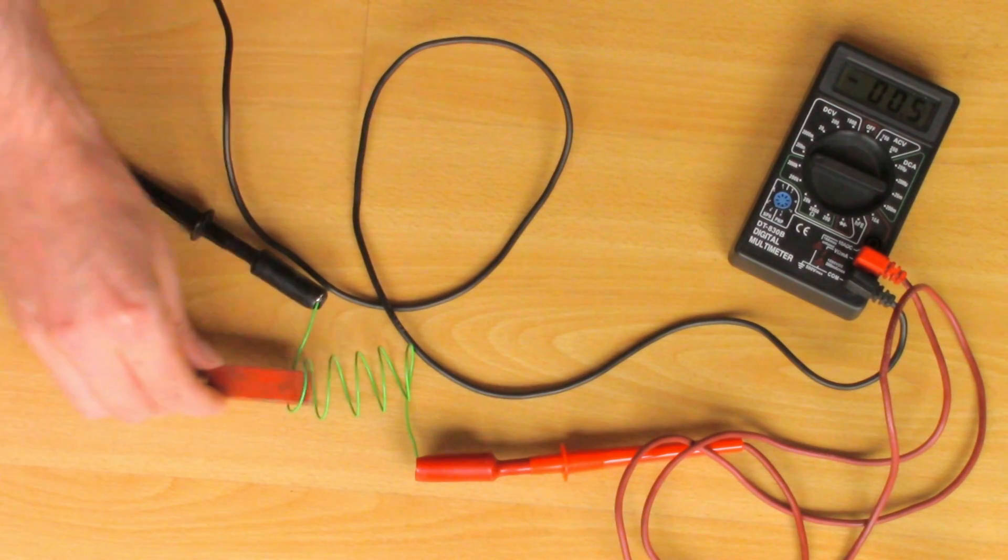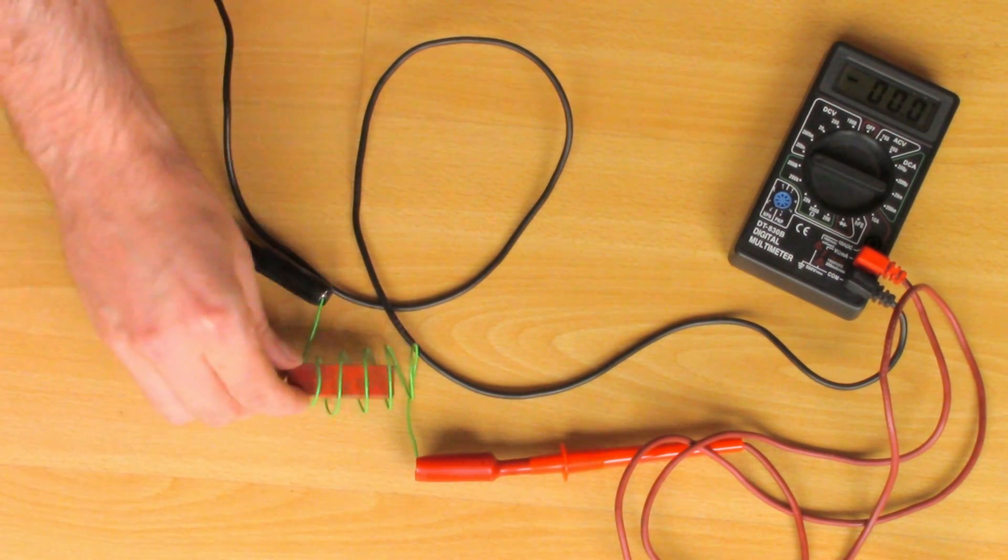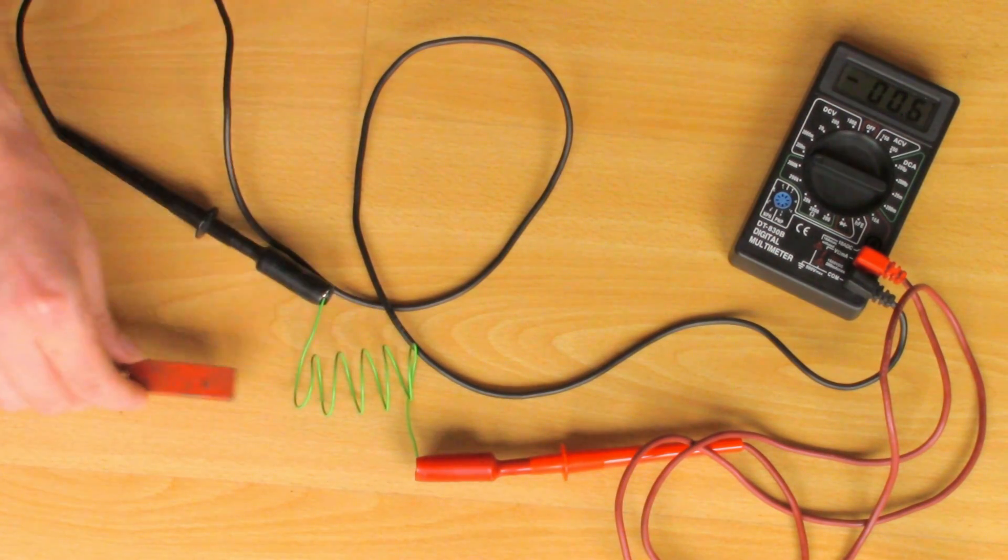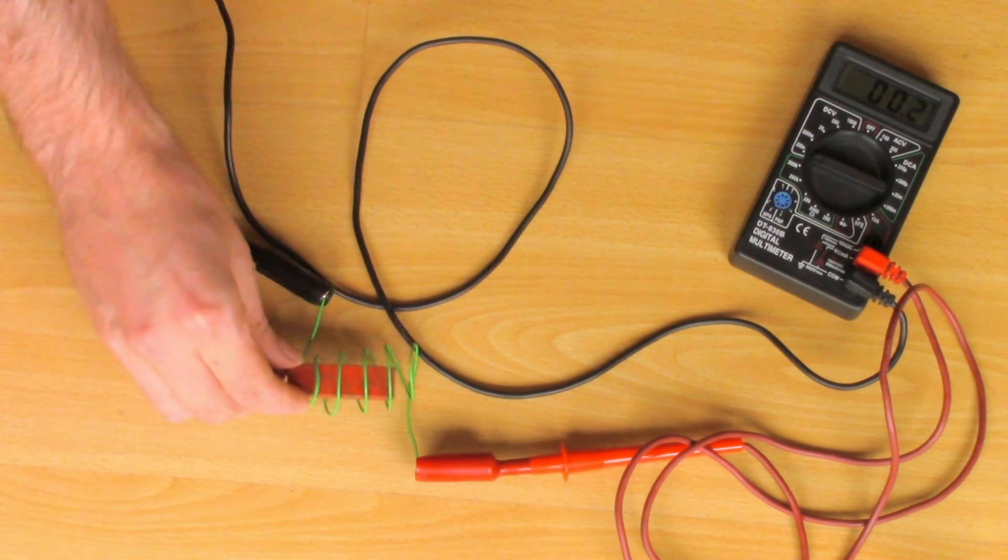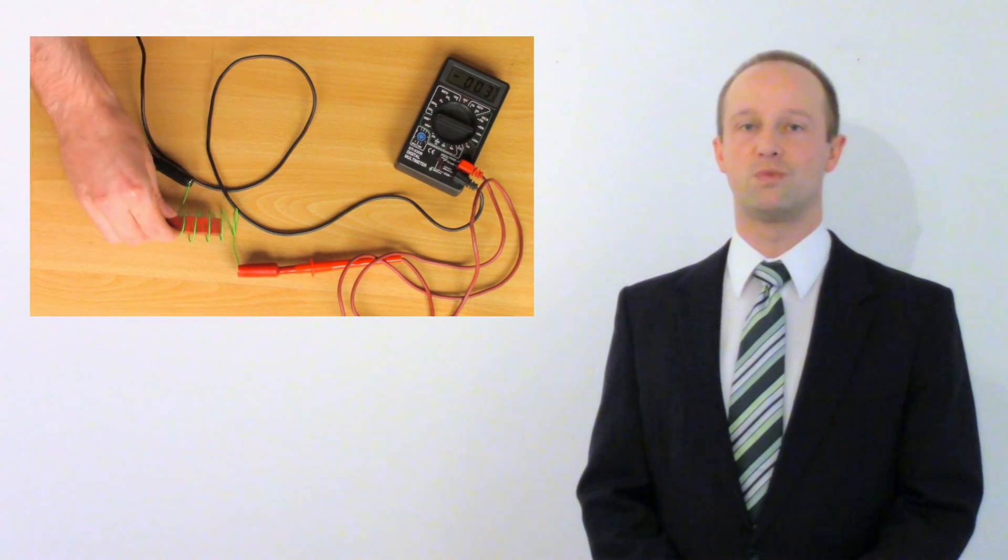This is induction. With a constantly changing magnetic field we induce a potential difference across the ends of the coil and we induce a current to start flowing in the coil. This is a simple electrical generator and all generators work on this principle.